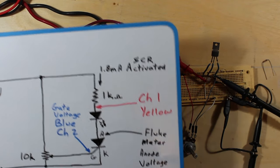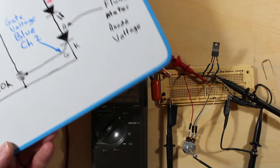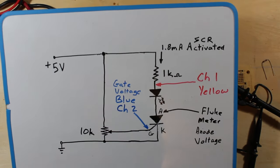And we have a 10K potentiometer, which is right here. And that's going to vary the voltage for us to the gate.